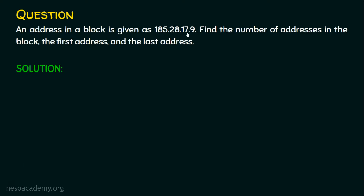We know the given IP address is a class B IP address. Why? The first octet is between 128 and 191. So 185 is falling between 128 and 191, and we can say it is a class B network.